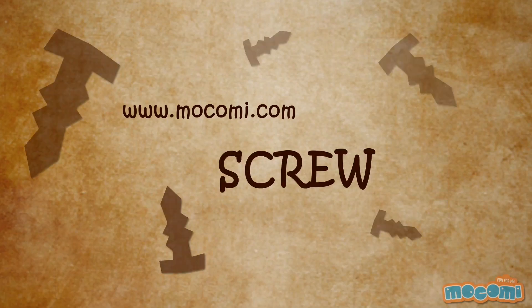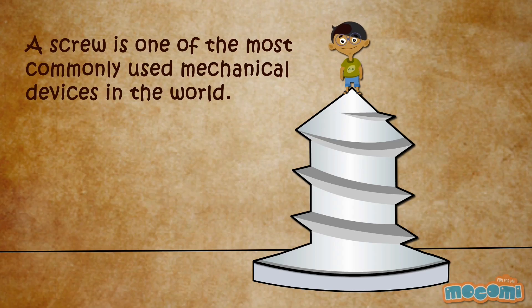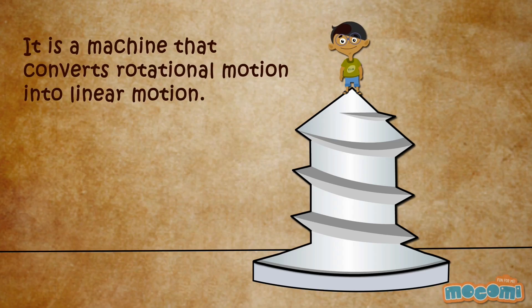What is a screw? A screw is one of the most commonly used mechanical devices in the world. It is a machine that converts rotational motion into linear motion.